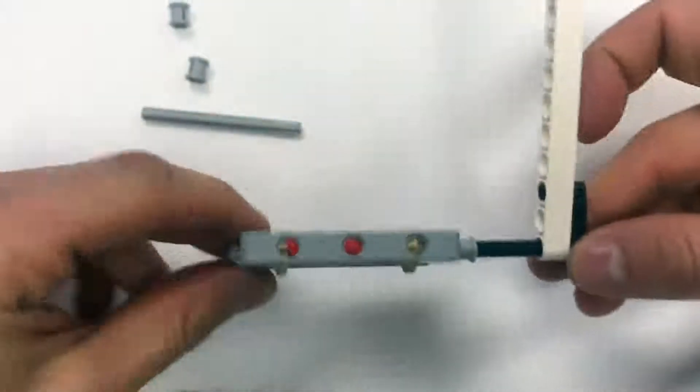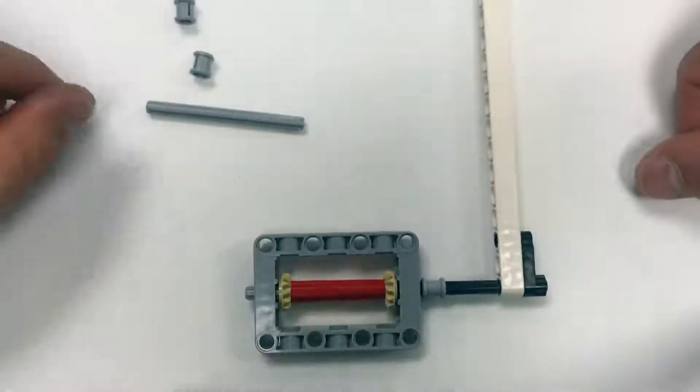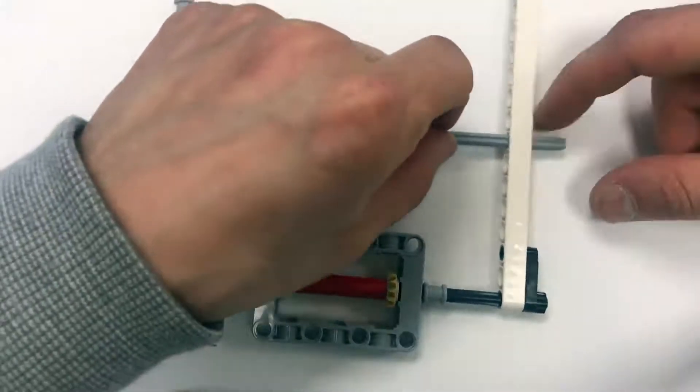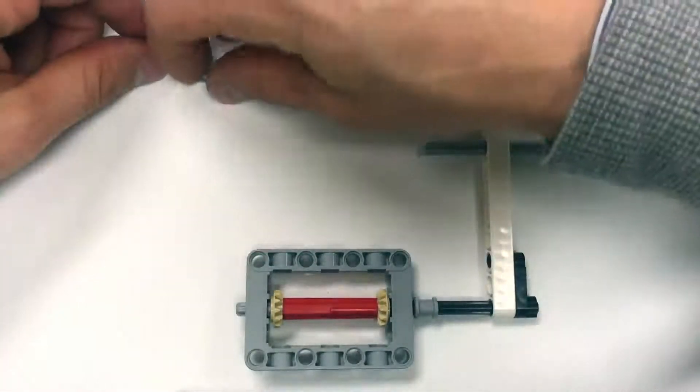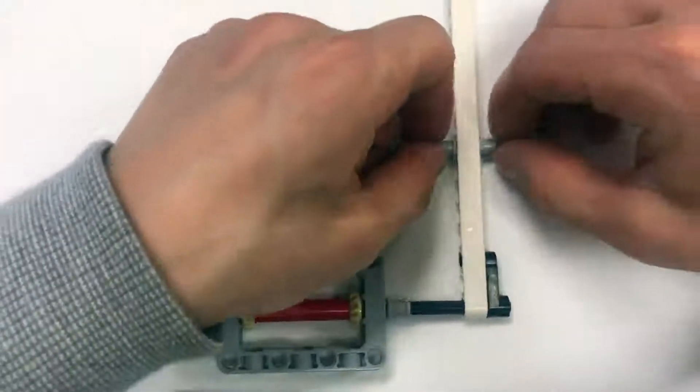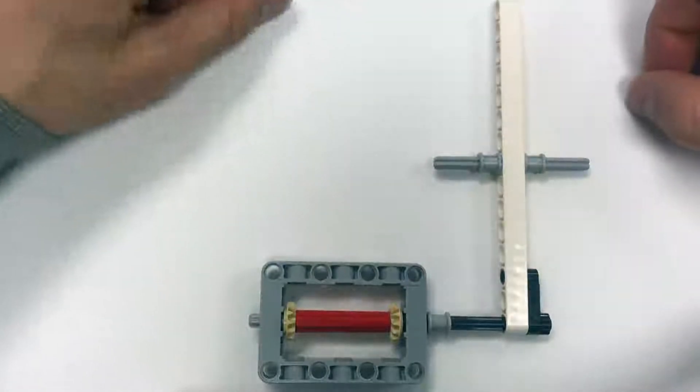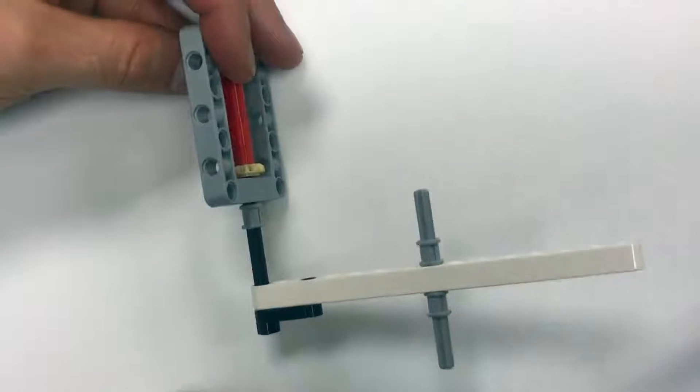Now, with it facing this way, I'm going to stick the gray axle about halfway up the beam, and I'm going to put a gray bushing on each end. And we have our first active attachment. Let's hook it up to the robot.